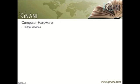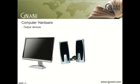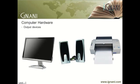An output device is any peripheral device of a computer that is used to provide the results of data processing carried out by a computer to the outside world. Some of the commonly used output devices are monitor, speakers, and printer. In computing, input and output refers to the communication between a computer and the outside world. While inputs are the signals or data sent to the system, outputs are the signals or data sent by the system to the outside world. In the following sections, we'll be covering some of the commonly used output devices.